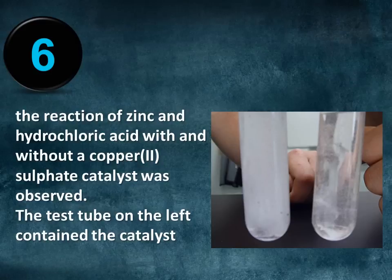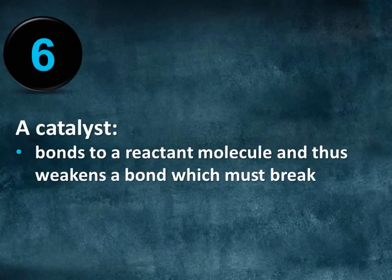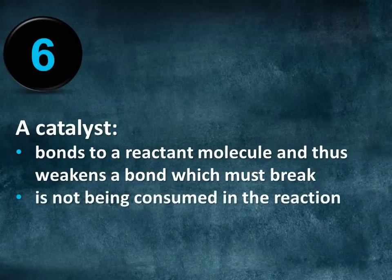The test tube containing a catalyst had a faster and more vigorous reaction. A catalyst alters the rate of reaction by bonding to a reactant molecule and thus weakening a bond which must break for the reaction to take place. A catalyst is not being consumed in the reaction.